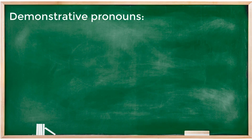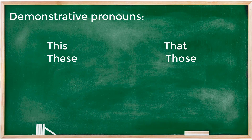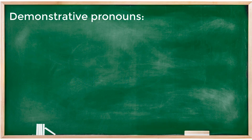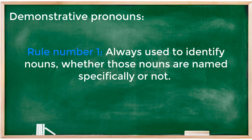Demonstrative pronouns are: this, these, that, those. 'This' and 'these' are used to point something near in distance or time — for example, 'Look at this.' 'That' and 'those' are used to point something far in distance or time — for example, 'Those were the days.'